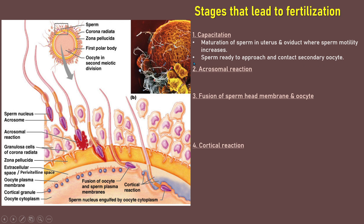The second stage is acrosomal reaction. In this stage, the sperm already approaches the secondary oocyte, where it will swim and pass through the corona radiata, through the granulosa cells. Then the sperm will release its hydrolytic enzyme from the acrosome to digest the zona pellucida.